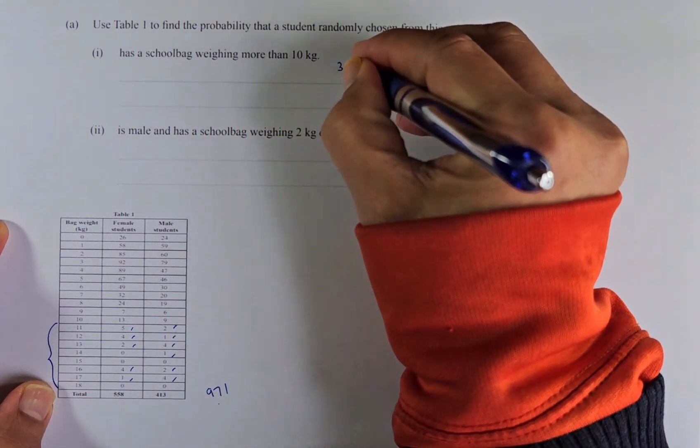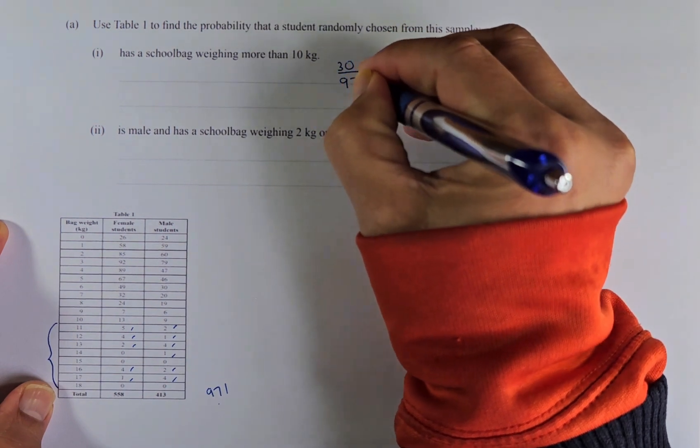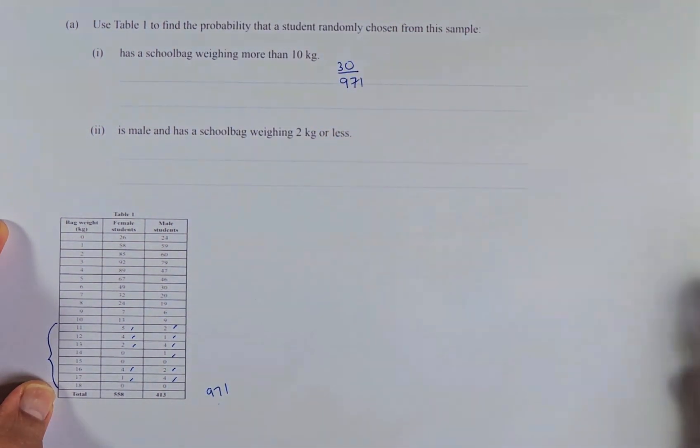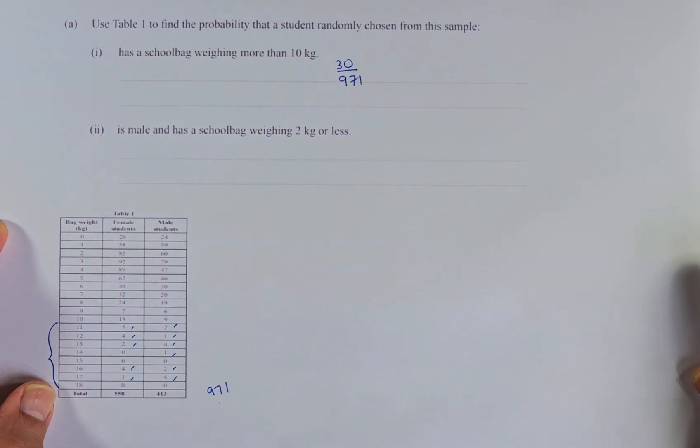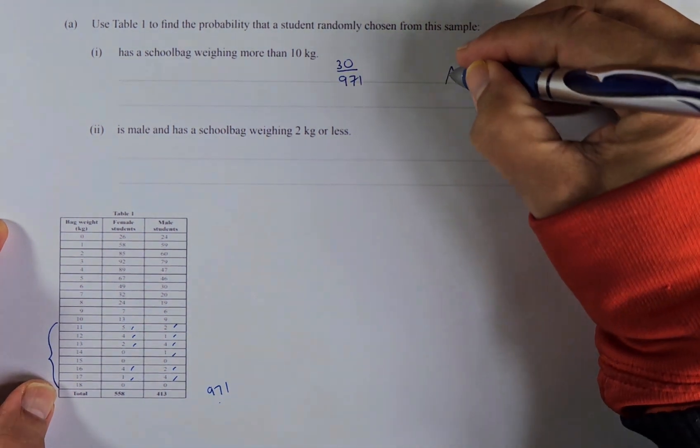So the probability is going to be 30 out of 971. That's what we calculated before. So if you get that, that will be an easy achieve.